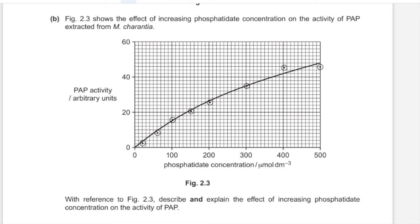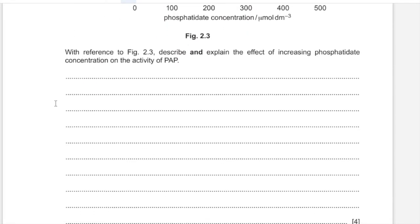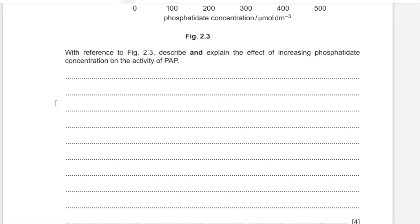Figure 2.3 shows the effect of increasing phosphatidate concentration on the activity of PAP extracted from M. charantia. With reference to Figure 2.3, describe and explain the effect of increasing phosphatidate concentration on the activity of PAP.